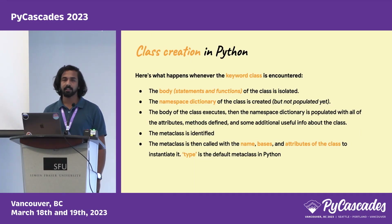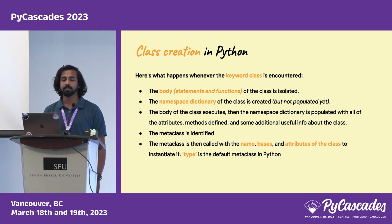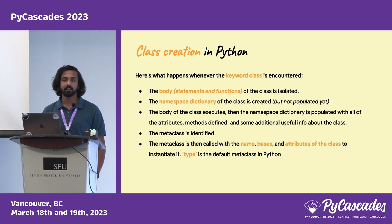Before moving to metaclasses, let's look at the class creation steps in Python — what happens when the keyword class is encountered. First, the body of the class is isolated, including statements and functions defined in the class. Next, the namespace dictionary is created. Then the body is executed and the namespace dictionary is populated with attributes, methods, and additional useful info — it stores all attributes and functions of the class.